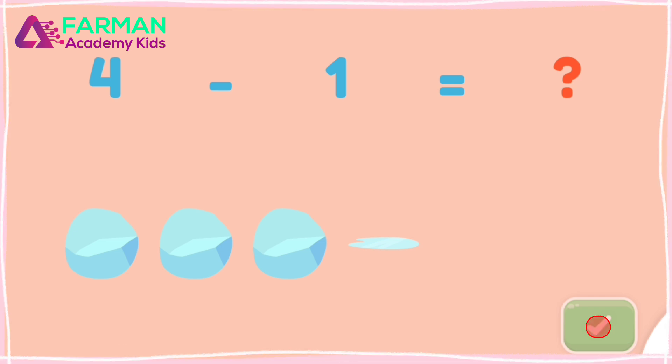What is 4 minus 1? Tap and count the snowballs. Make sure all of the snowballs are highlighted. What is 4? Oops! 4 minus 1 equals 3.